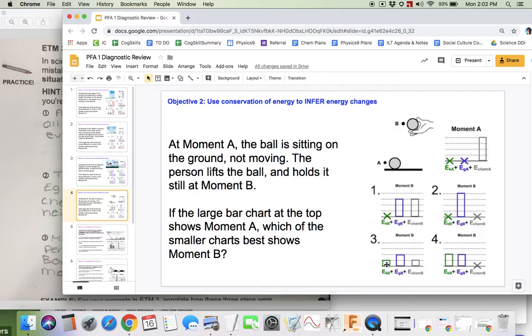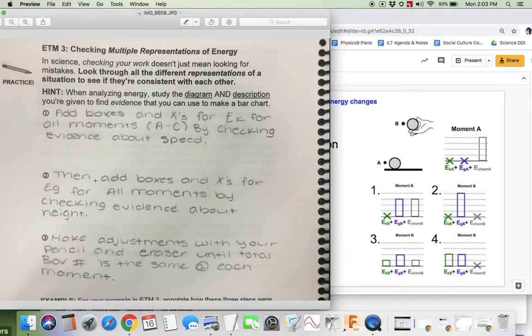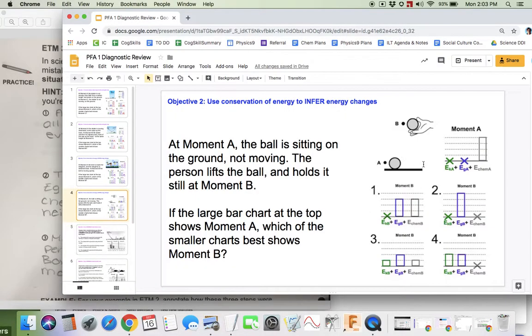That means 3 can't be right, 4 can't be right because they both show some kinetic energy at moment B. And then I can go to evidence about height, I guess. If I look, I know that the height has increased from being on the ground to being up high. Both of these blue bars increase, so that doesn't really tell me what I need to know.